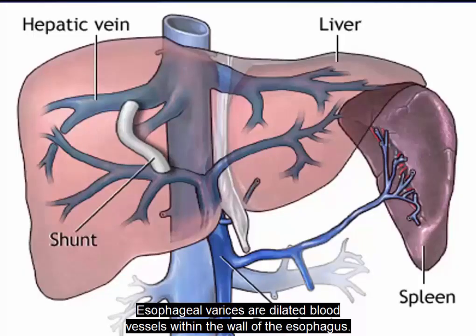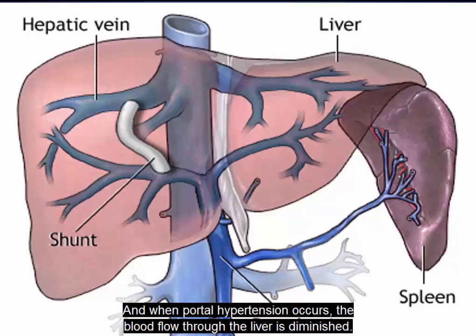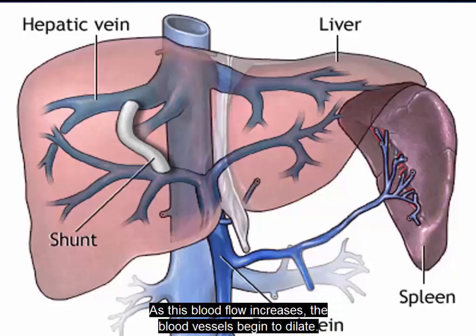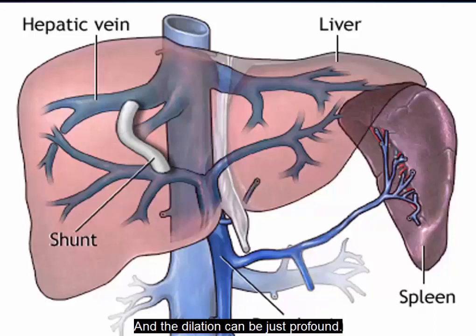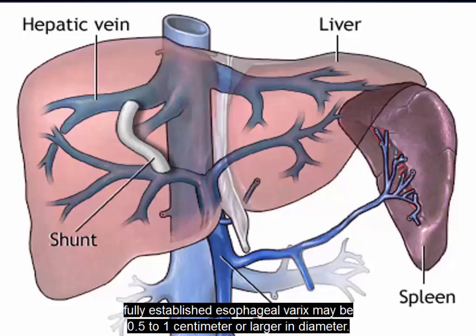Esophageal varices are dilated blood vessels within the wall of the esophagus. Patients with cirrhosis develop portal hypertension, and when portal hypertension occurs, the blood flow through the liver is diminished. The blood flow increases through microscopic blood vessels within the esophageal wall, and as this blood flow increases, the blood vessels begin to dilate. The original diameter of the blood vessel is measured in millimeters, while fully established esophageal varices may be 0.5 to 1 centimeter or larger in diameter.